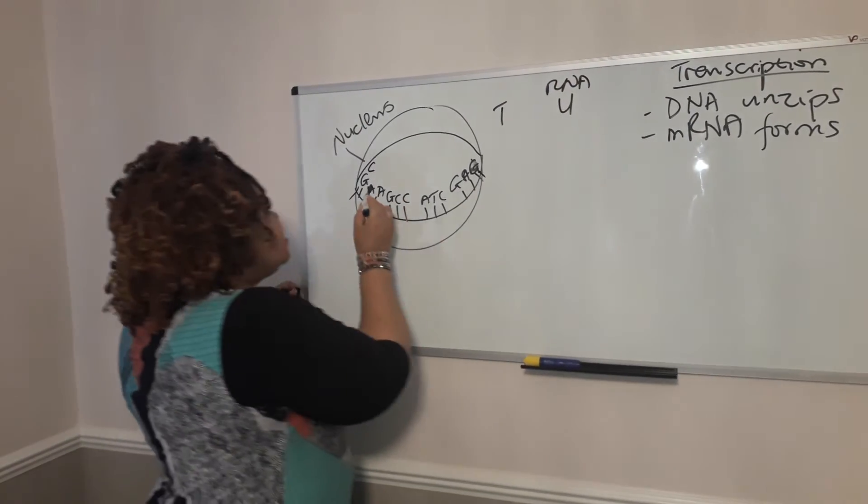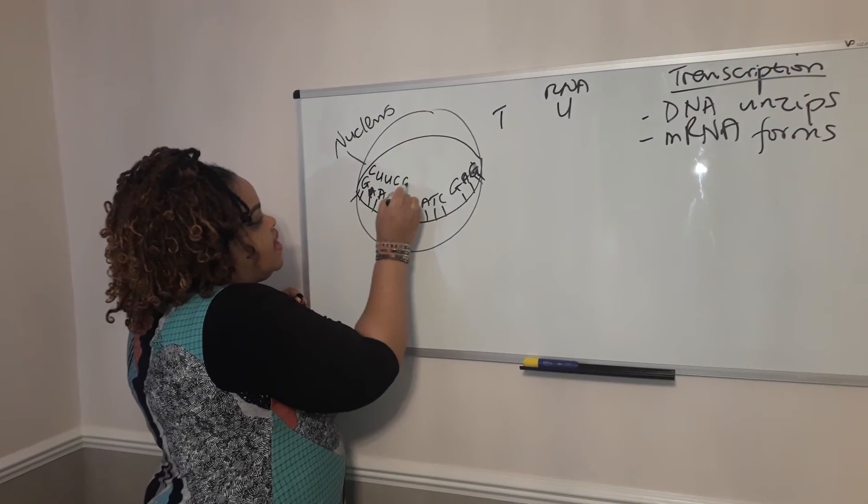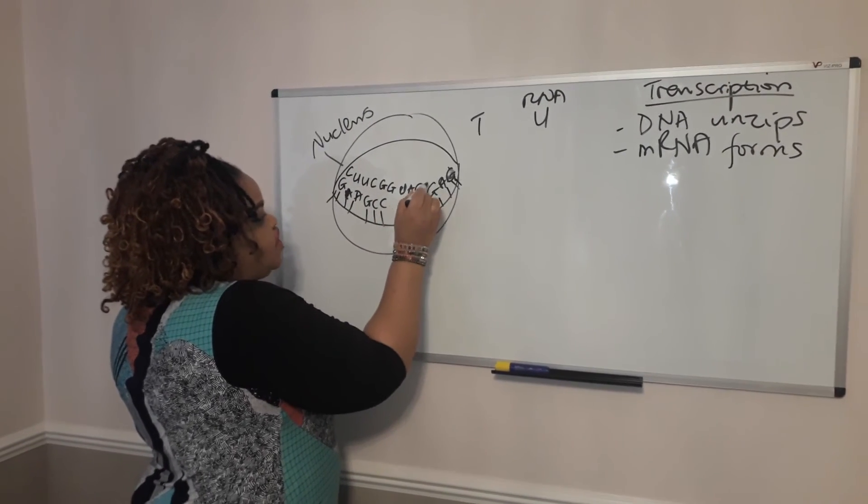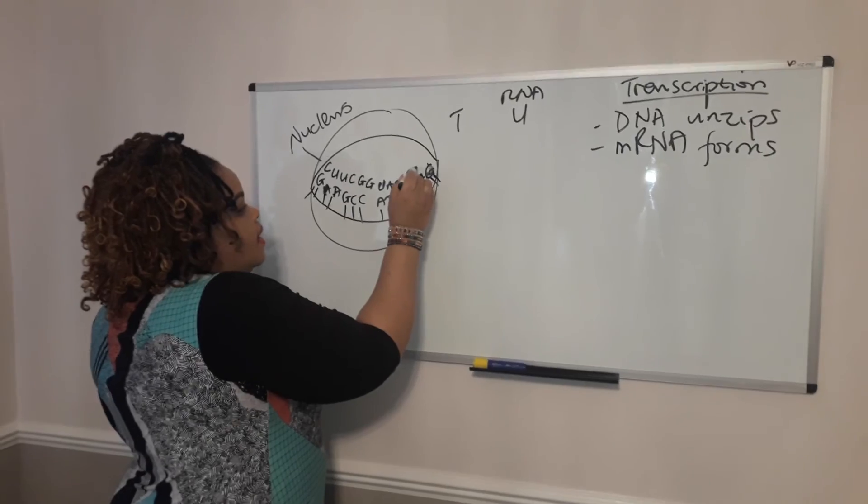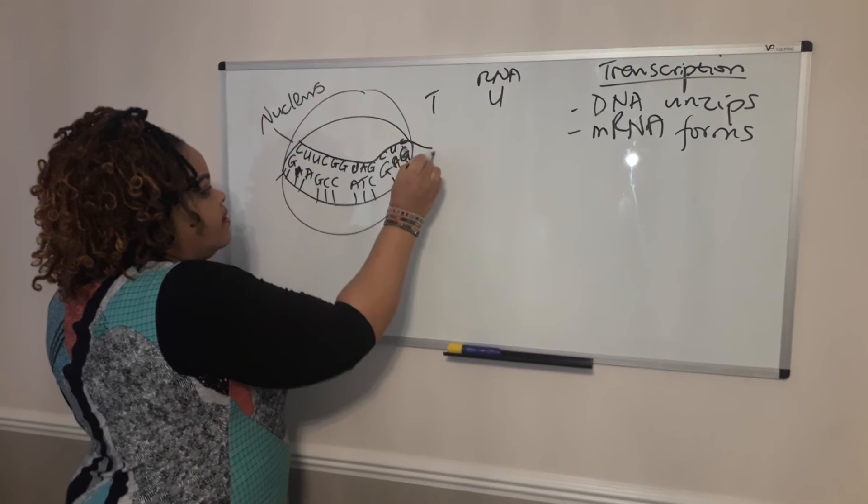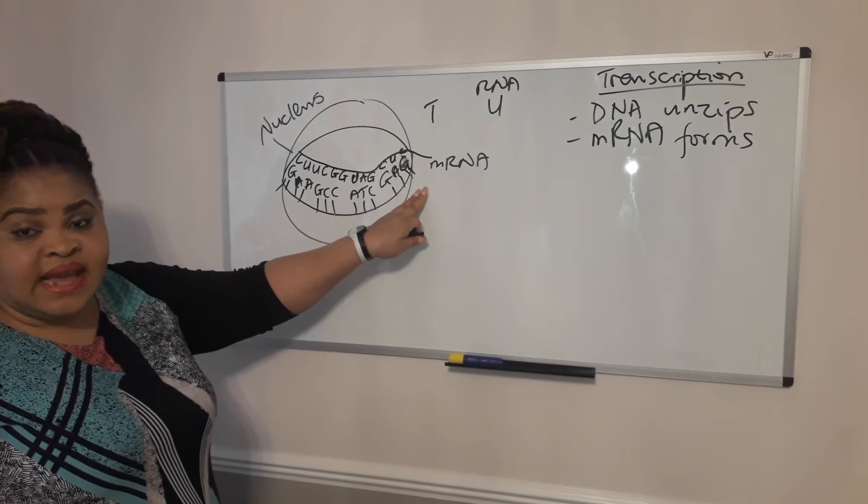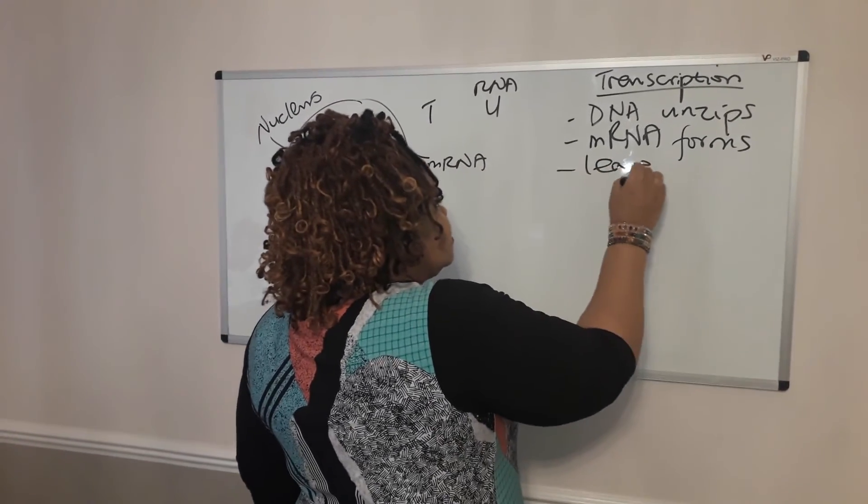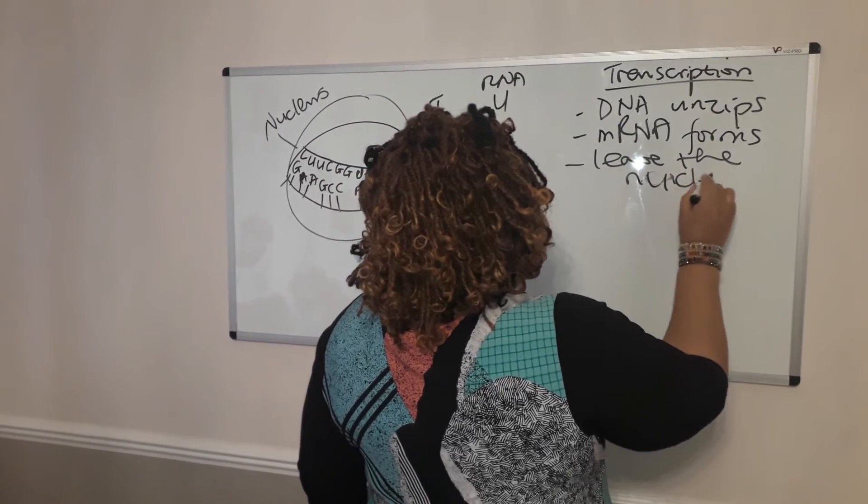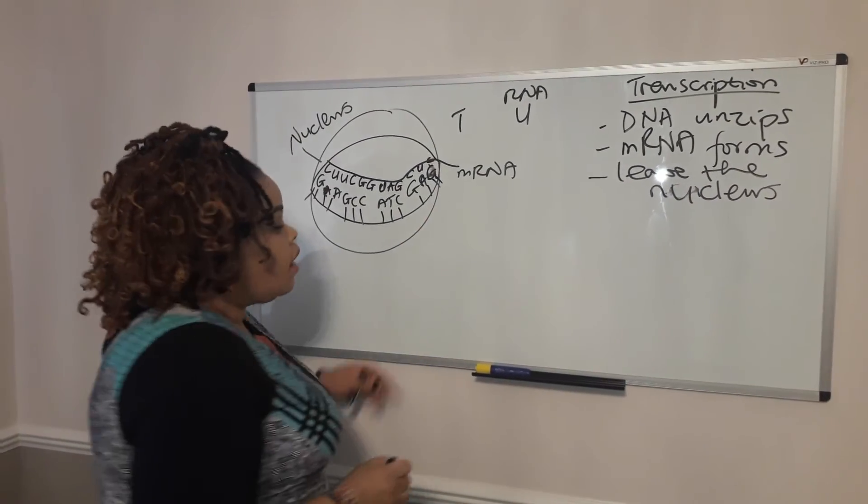One difference between DNA and RNA: rather than a T for the RNA, it is a U. So this is an A, so it would be a U. A would be a U, G would be C, C would be G, A would be U, T would be an A, then G, C, U, and C. Now that is the RNA strand. So once this RNA strand is created, it will then leave the nucleus.